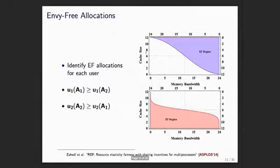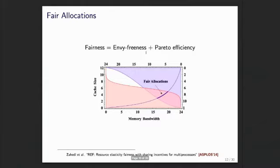What are the fair allocations in this setting? First, the envy-free allocations: user one says give me any allocation in the blue region and I will be envy-free, because she derives more utility from her allocation than from the other person's. User two says any allocation in the red region leaves them not envious. Taking them together, fairness means no user being envious plus Pareto efficiency — all allocations on the contract curve. This is the full set of fair allocations in the cache size and memory bandwidth space.